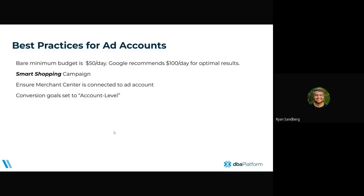Here are recommendations and troubleshooting, best practices for ad accounts. The bare minimum budget is $50 a day. Google does recommend $100 a day for optimal results, but we've seen accounts with a $50 a day budget that have been able to run and serve just fine. We also want to make sure the campaign is set up as a smart shopping campaign, because that is the only way it's going to be able to serve and the only way the vehicle ad program is available. We also want to ensure that the Merchant Center stays connected to the ad account — if it ever gets disconnected, there is going to be some downtime, so please don't remove us from the ad account.